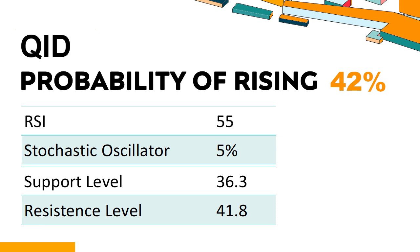QID's short-term resistance level is 40.2. If it breaks through 40.2 during this session, it will look up to 41.8.